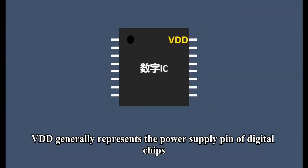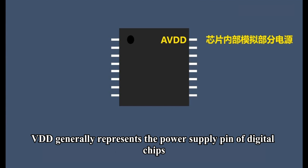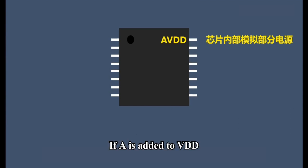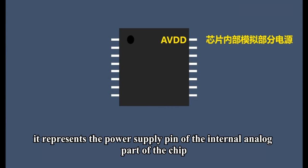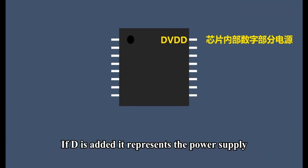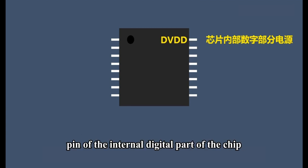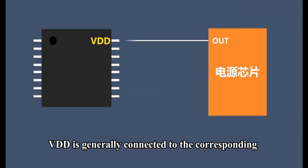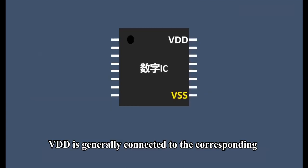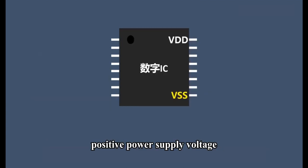VDD generally represents the power supply pin of digital chips. If A is added to VDD, it represents the power supply pin of the internal analog part of the chip. If D is added, it represents the power supply pin of the internal digital part of the chip. VDD is generally connected to the corresponding positive power supply voltage.